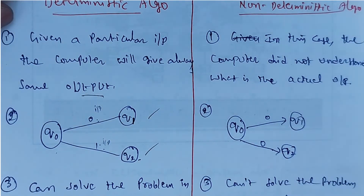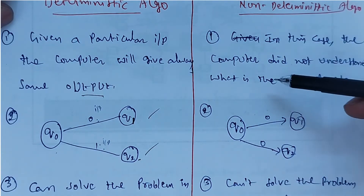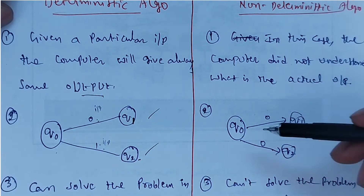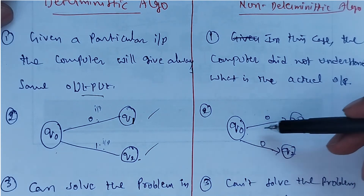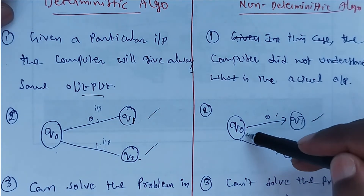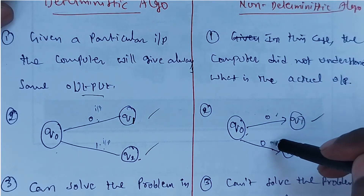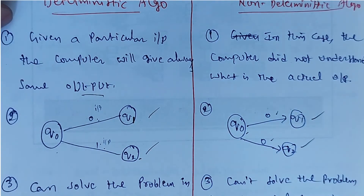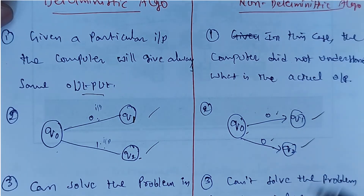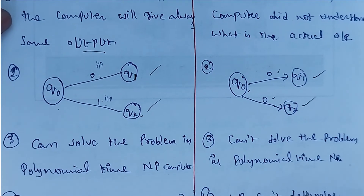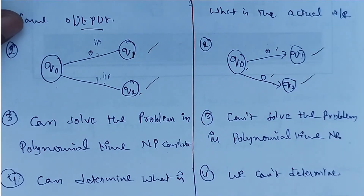In the non-deterministic case, the computer does not know what the actual output is. If you give q0 with input 0, one time it may go to q1, and another time with the same input 0 it may go to q2. So even with the same input value, it produces different outputs — the output cannot be determined by the computer.